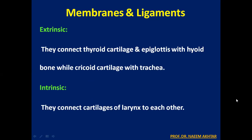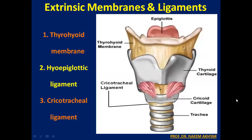The membranes and ligaments of the larynx are either extrinsic or intrinsic. The extrinsic membranes and ligaments connect the thyroid cartilage and epiglottis with the hyoid bone, while the cricoid cartilage connects with the trachea. This view of the larynx shows the extrinsic membranes: the thyrohyoid membrane and the cricotracheal ligament between the cricoid cartilage and the first ring of the trachea.